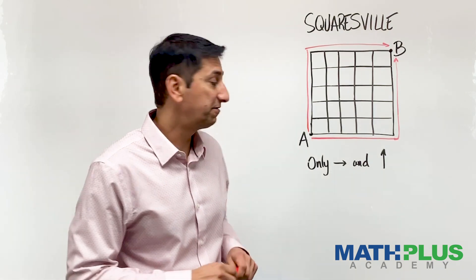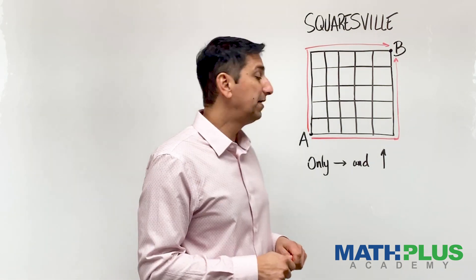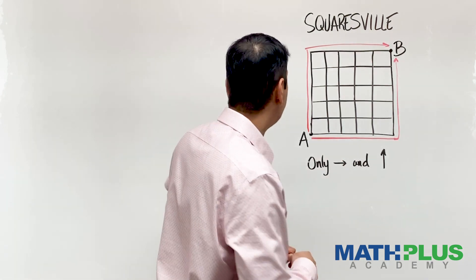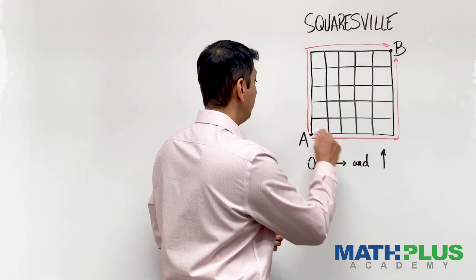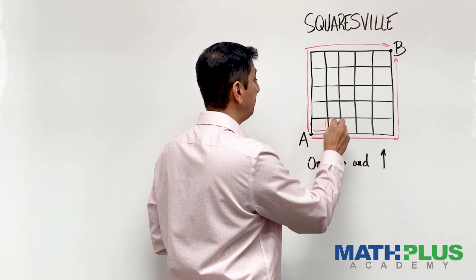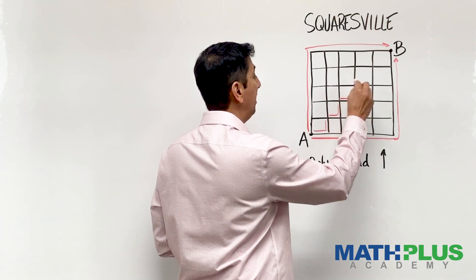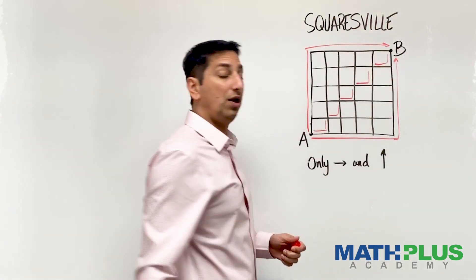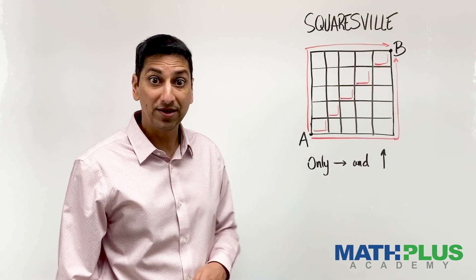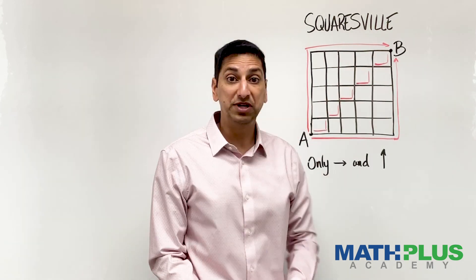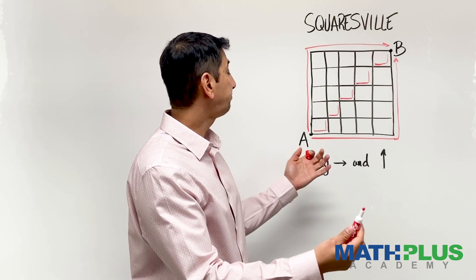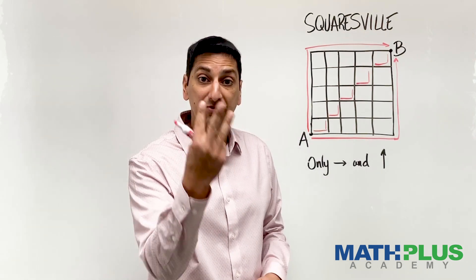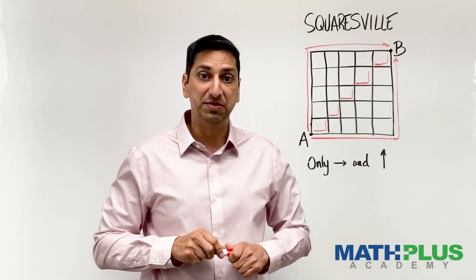Now we have two ways to get from A to B. And of course, you could take some of the interior roads as well. Maybe I start at A and I go right, then up, then right, then up, then right, then up, then right, then up — I still get to Point B. So now we have three ways that you can get from A to B.